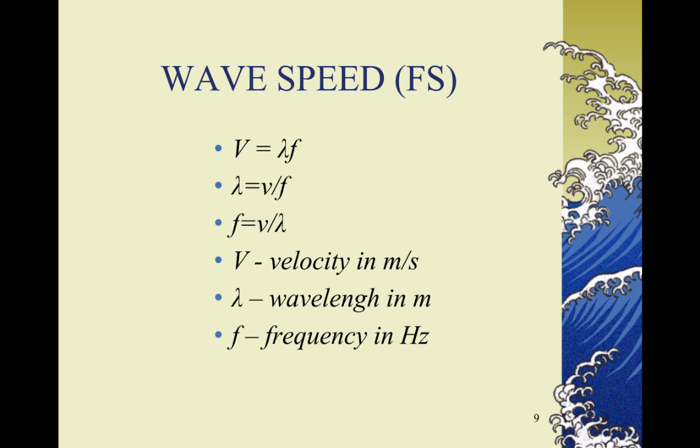Lambda is equal to v divided by f, and f is equal to v divided by lambda. You also might want to add that t is equal to 1 over f. v is the velocity in meters per second, lambda is the wavelength in meters, and f is the frequency in hertz.